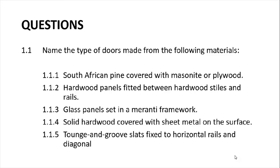Questions — name the type of door made from the following materials: one, South African pine covered with masonite or plywood; two, hardwood panels fitted between hardwood stiles and rails; three, glass panels set in a meranti framework; four, solid wood covered with sheet metal on the surface; five, tongue and groove slates fitted to horizontal rails and diagonal braces. I'll give you a chance to focus on this question and put some answers to it.